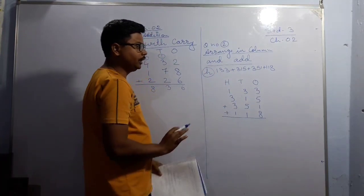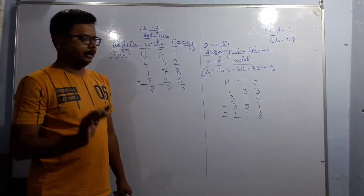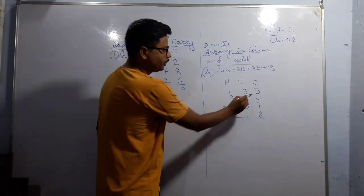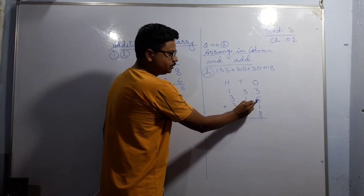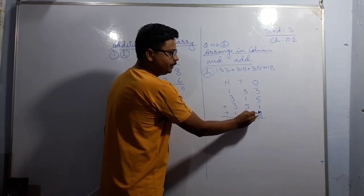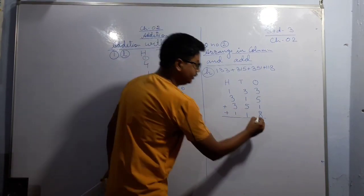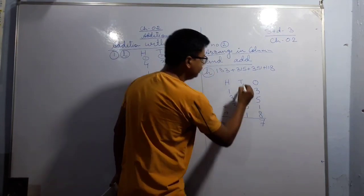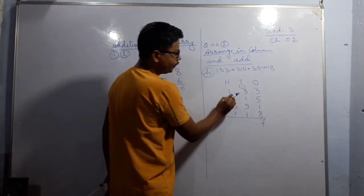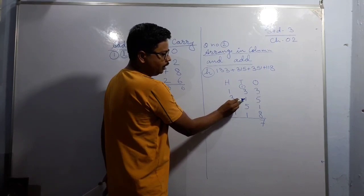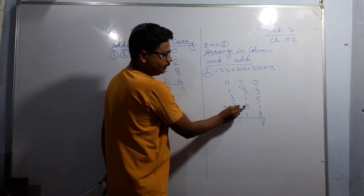Now we have to simply add. You can see: 3 + 5 = 8, 8 + 1 = 9, 9 + 8 = 17, 7 carry 1. 3 + 1 = 4, 4 + 5 = 9, 9 + 1 = 10, 10 + 1 = 11, 1 carry 1.